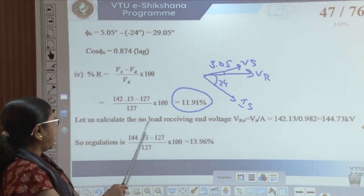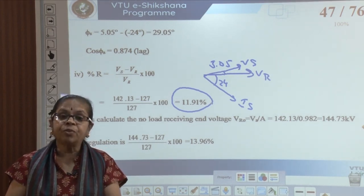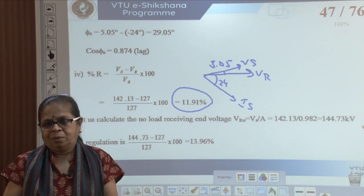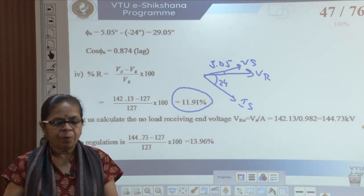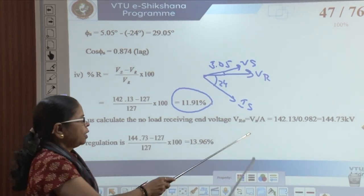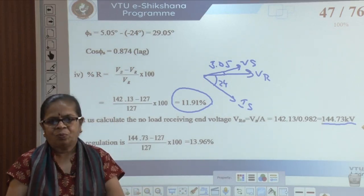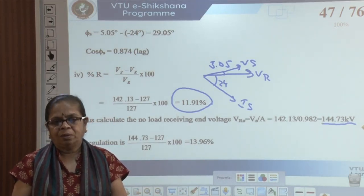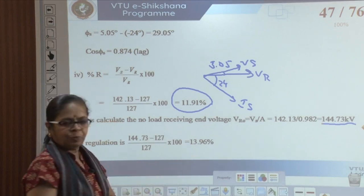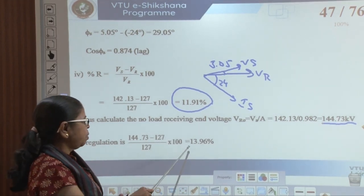You can also calculate the receiving end no-load voltage. We defined regulation another way: the difference between the no-load voltage at the receiving end minus the full load voltage, divided by full load voltage. On no load, Ir = 0, therefore Vr0 = Vs/A = 144.73 kV. On no load the receiving end voltage has become higher than the sending end voltage because A is less than 1. So the regulation is 13.96% using the other formula.